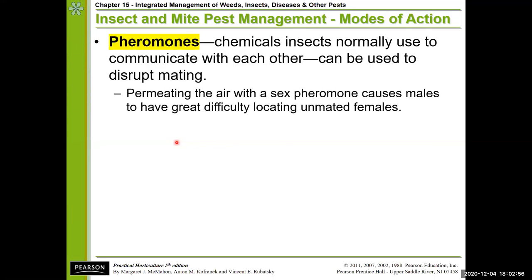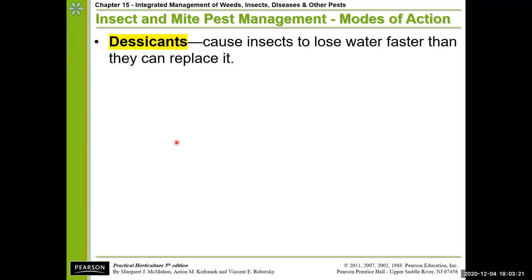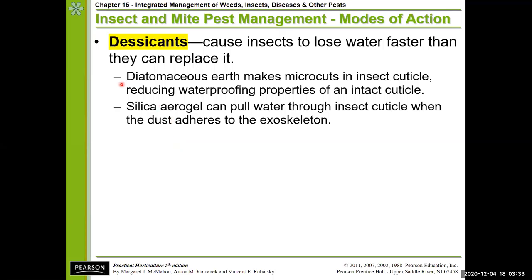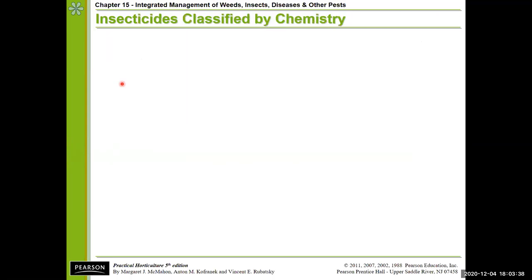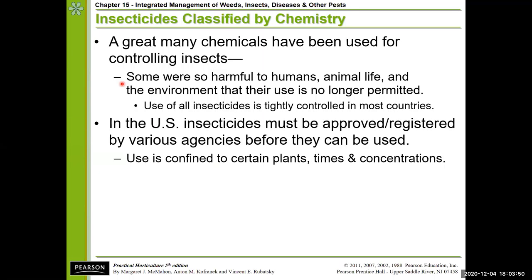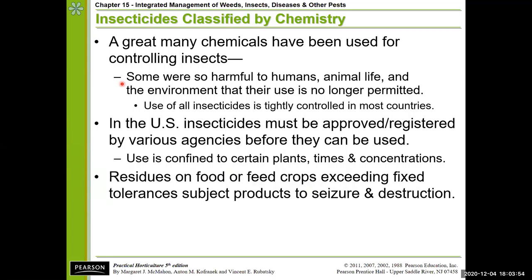Pheromones can disrupt mating, confusing the insect, or we can use them as bait for traps — attracting the male or female insect and poisoning it there. Desiccants cause insects to dehydrate. Diatomaceous earth is a very common organically approved desiccant, especially useful on things like the potato beetle. So there are lots of different classes of insecticides. We classify them by their mode of action, but also by the actual chemical makeup. All insecticides and pesticides have to be approved and registered with the EPA, and then regulated by state agencies.